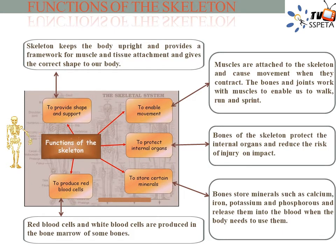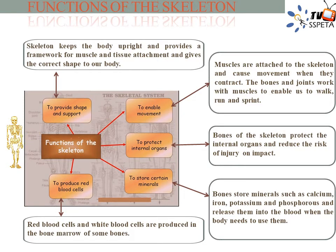3. Protection — the bones of the skeleton protect the internal organs and reduce the risk of injury on impact. For example, the cranium protects the brain, the ribs offer protection to the heart and lungs, the vertebrae protect the spinal cord, and the pelvis offers protection to the sensitive reproductive organs.